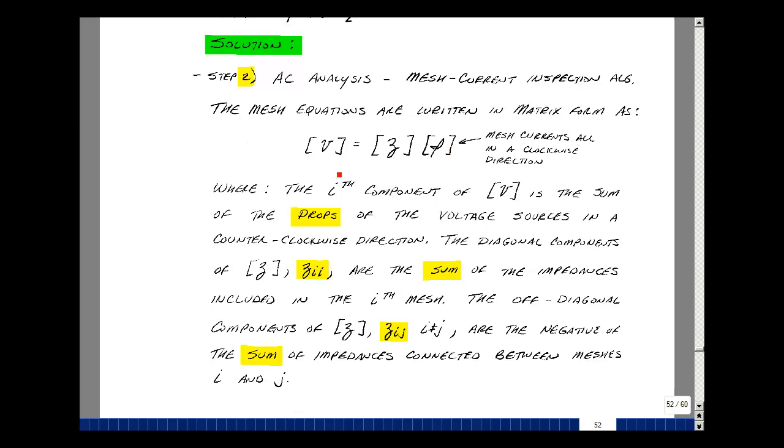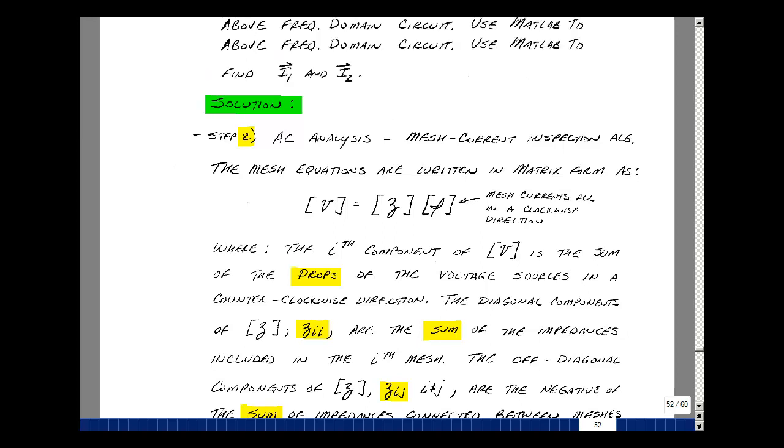If we have n meshes, then V will have n rows in one column, and Z will have n rows and n columns. The vector I is our unknowns, and that would be n rows in one column also. The i-th component in this matrix is found by taking the sum of the voltage drops of the voltage sources in a counterclockwise direction. The entries in Z are two types, the diagonal with some of the impedances in the i-th mesh. The off-diagonal terms, this is where the entry is not equal to the same subscript, are found by taking the negative of the sum of the impedances connected between meshes I and J.